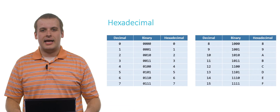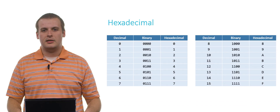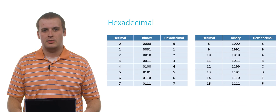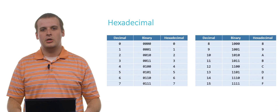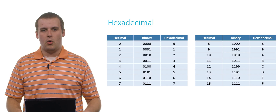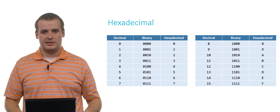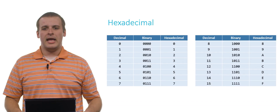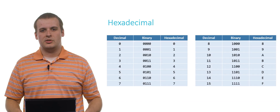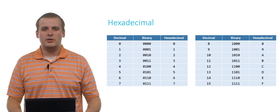Each hexadecimal digit corresponds to a unique arrangement of four binary digits. So the binary string 0, 0, 0, 0 corresponds to hexadecimal digit 0. 0, 1, 1, 0 corresponds to hexadecimal digit 6. And 1, 1, 1, 1 corresponds to hexadecimal digit F.